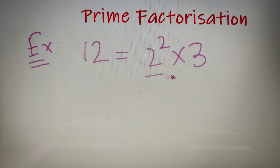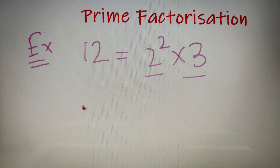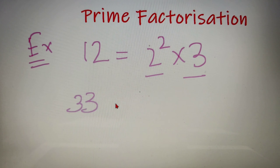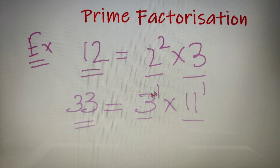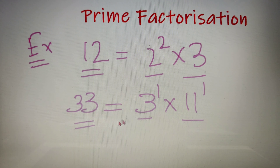Both 2 and 3 are prime numbers and 2 is raised to a positive power, same as 3. Let's take another example — suppose we have the number 33. Now 33 is equal to 3 to the power 1 into 11 to the power 1, and both 3 and 11 are prime numbers. So you can see that we can represent all numbers as a product of prime numbers raised to any arbitrary power.